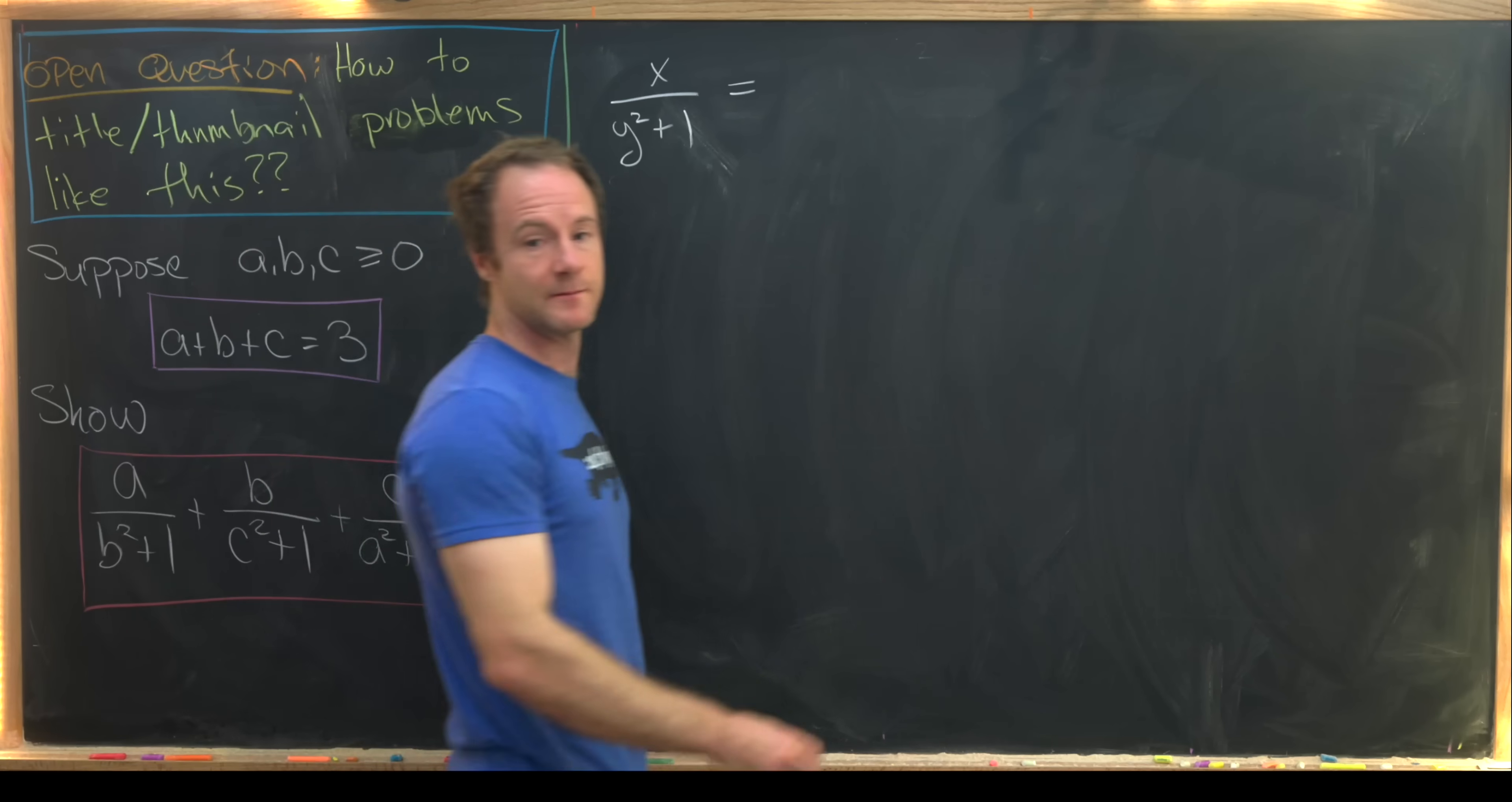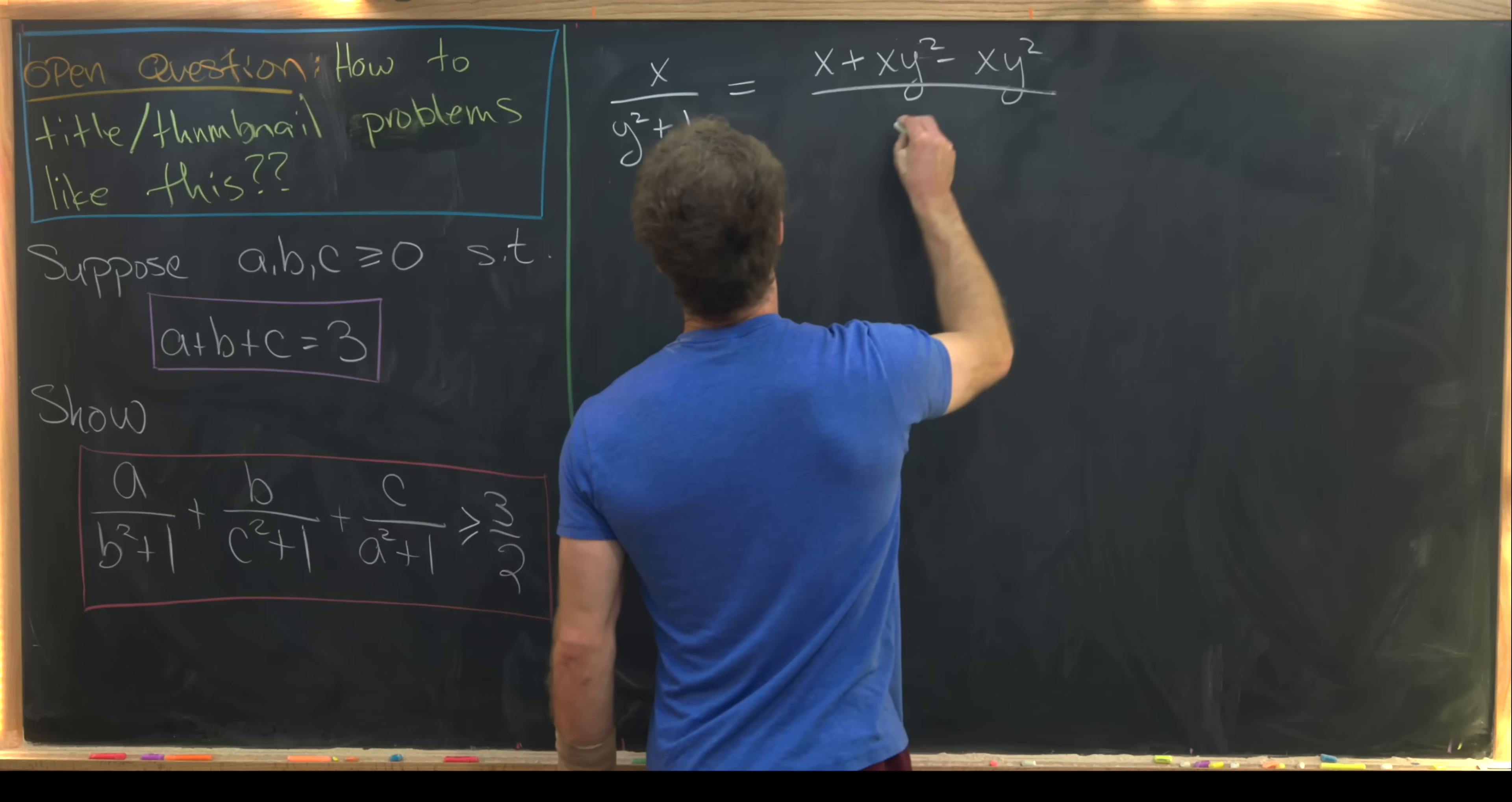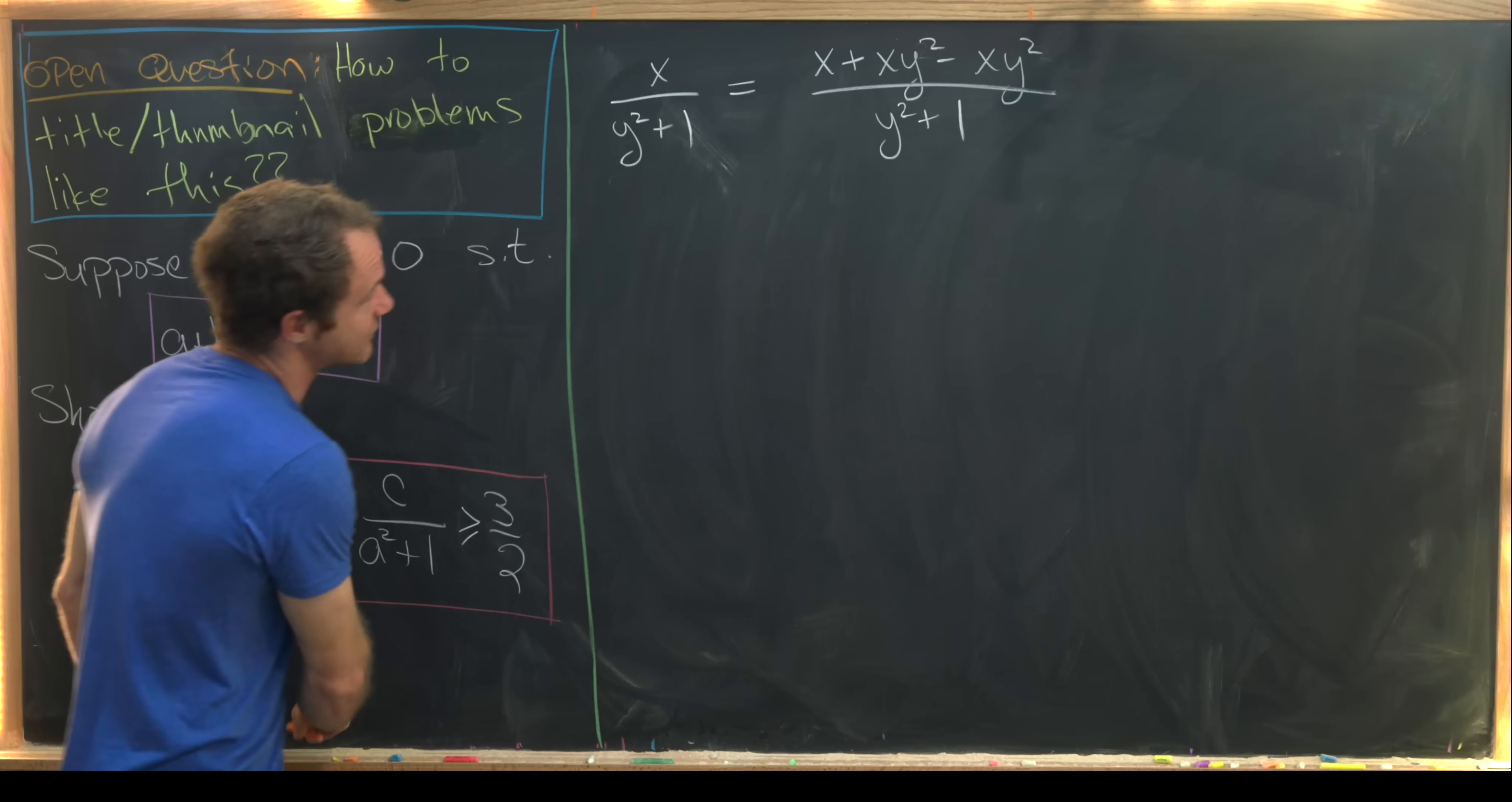That complicated format is x plus x times y squared minus x times y squared. So notice that we just added 0, which means we didn't do anything. But why did we add that version of 0?